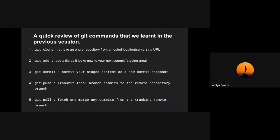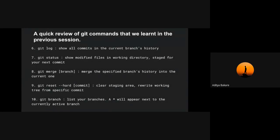After git push comes git pull. Git pull basically fetches any new changes that are currently present on the hosted server or GitHub. Then git log — git log shows all the commits that you have made from the beginning. Then git status — git status shows modified files in the working directory staged for your next commit. If you make some changes and don't do git add, those files are shown when you enter git status.